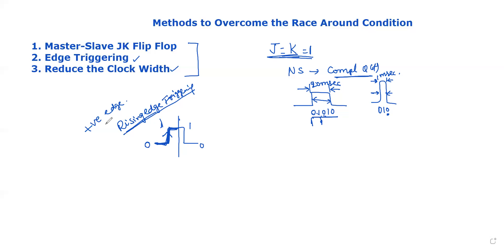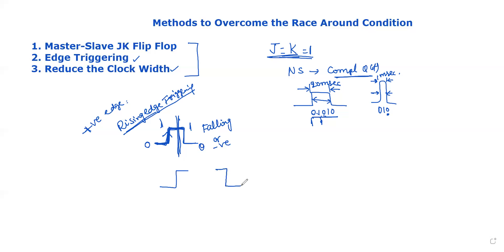The positive edge or rising edge triggers at the 0-to-1 transition. The second half is the falling edge — the 1-to-0 transition — which is the negative edge triggering clock pulse. So the flip-flop can be triggered either on the rising or falling edge.